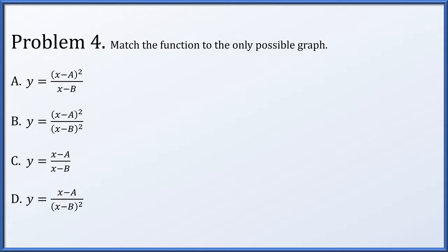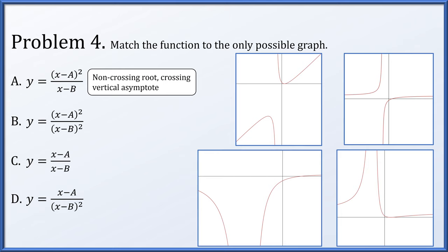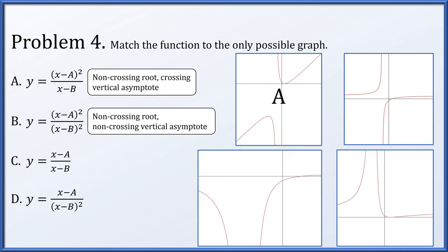In problem 4, we want to match four functions to four unlabeled graphs by determining which roots and asymptotes are crossing versus non-crossing. In option A, x = a is a root of the numerator of degree 2, so it's a non-crossing root. The denominator is degree 1, giving a single crossing asymptote. We're looking for a graph with a non-crossing root and a crossing vertical asymptote — that's the upper left. In part B, both numerator and denominator have roots of degree 2, so we need a non-crossing root and a non-crossing vertical asymptote — that's the bottom right.